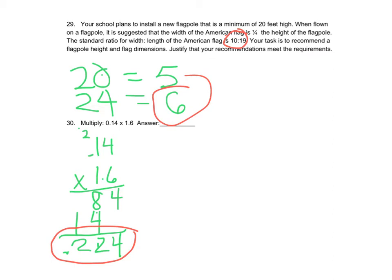The next one is simply to multiply, and really it's checking can you put the decimal in the right place? We have three numbers behind the decimal. This is what our multiplication looks like when we multiply, and we get 0.224.